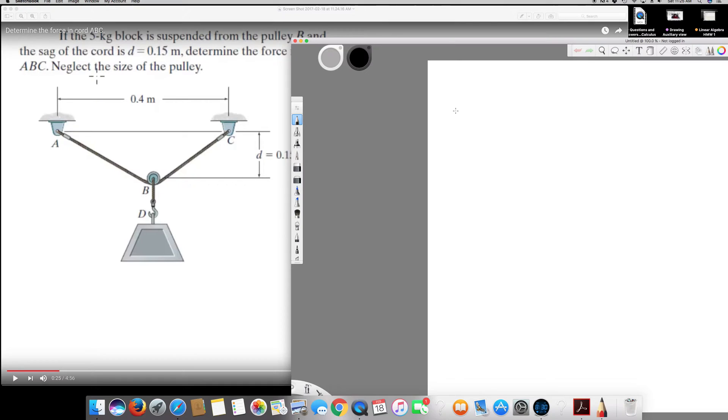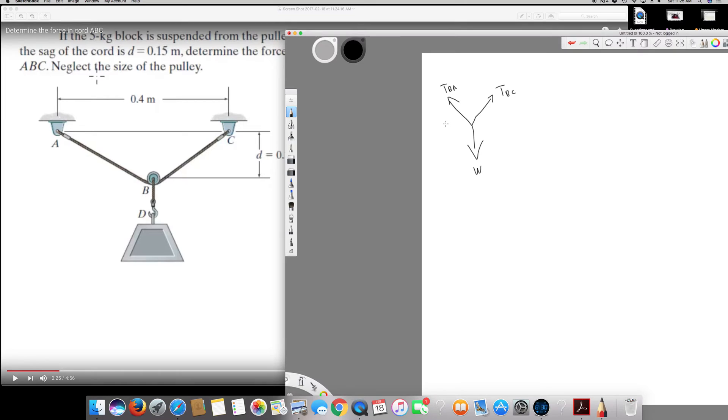Okay, so let's see how we can solve this. First of all, I am going to draw the free body diagram. It's going to be like this - in this one it's T_BA, and in this side it's T_BC. And down, the weight is pulling down, so we know all the things.